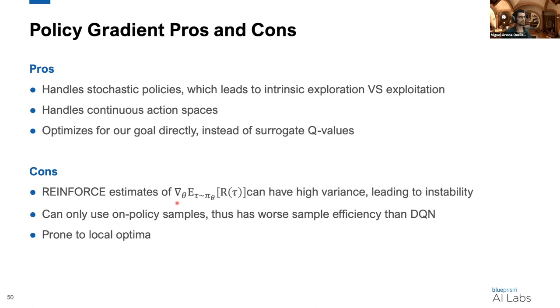However, there's still some downsides. The REINFORCE estimates of the expected return can have quite high variance, which can lead to a lot of instability in the training. Furthermore, we can only use on-policy updates. So the sample efficiency is a lot worse than DQN because in DQN, you can use both on and off policy samples.